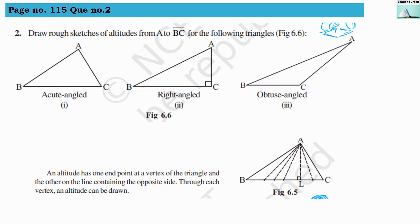Question number two: draw rough sketches of the altitude from vertex A to line segment BC for the following triangles — acute angle triangle, right angle triangle, and obtuse angle triangle. An altitude has one endpoint at a vertex of a triangle and the other on the line containing the opposite side. So here the vertex is A and the opposite side line segment is BC.